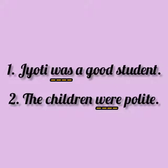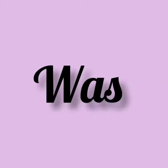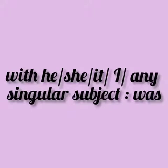Let us read a few more sentences to understand their uses. Was — Students, we use was with he, she, it, I. With I also we use was. And singular subjects. Singular subjects मतलब singular noun के साथ — he, she, it और I के साथ हम was का यूज करते हैं, past tense में.